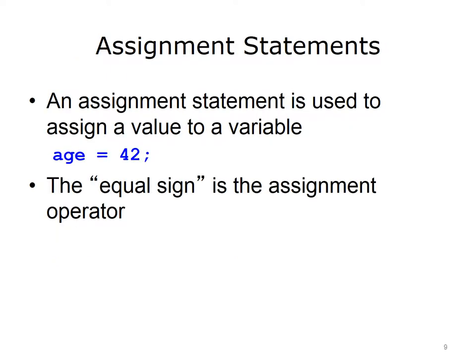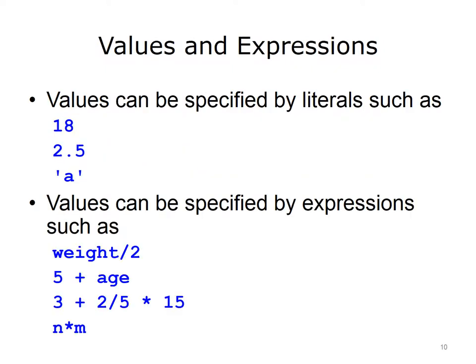After a variable has been declared, it can be used in the program. One way a variable is used is to have a value assigned to it — that is called an assignment statement. In Java, it looks like this example: age equals 42 semicolon. The equal sign is called the assignment operator. Note that this is different from the equality operator. Values can be assigned to variables using what are called literals — actual values such as 18, 2.5, or the character A. But values can also be specified by expressions. Expressions are composed of some combination of literals, variables, and operators.